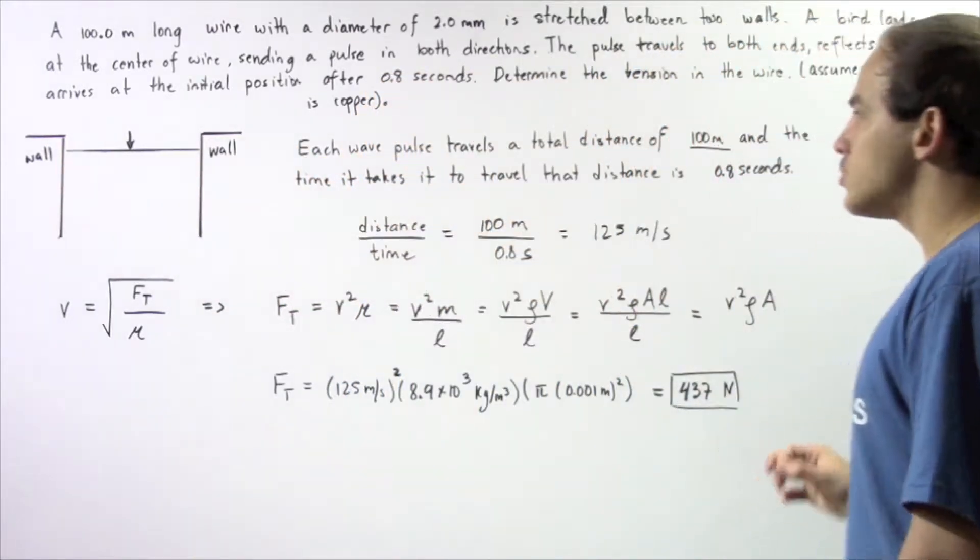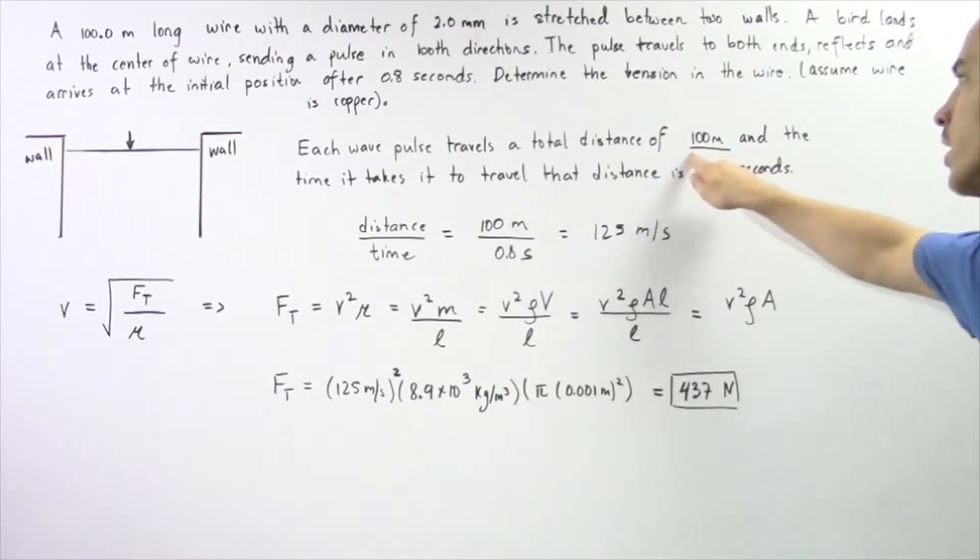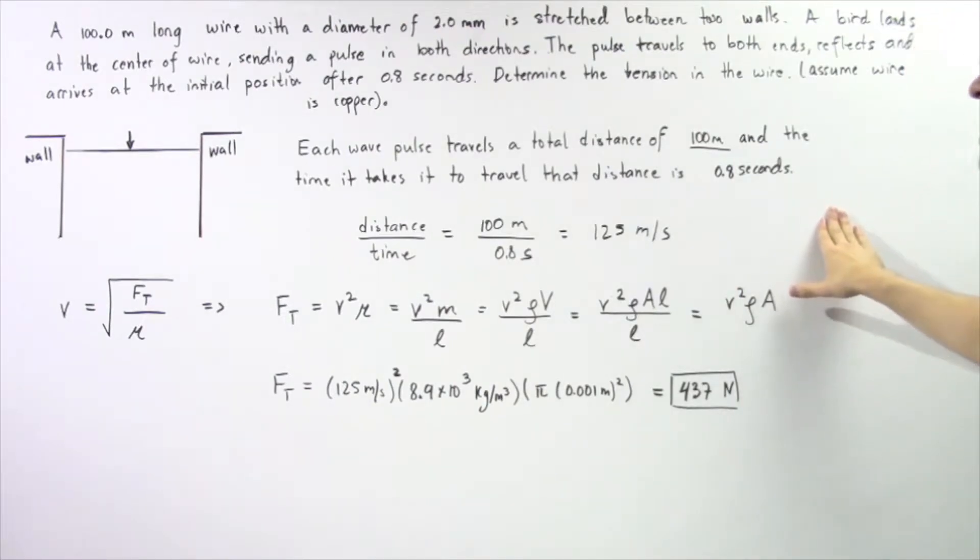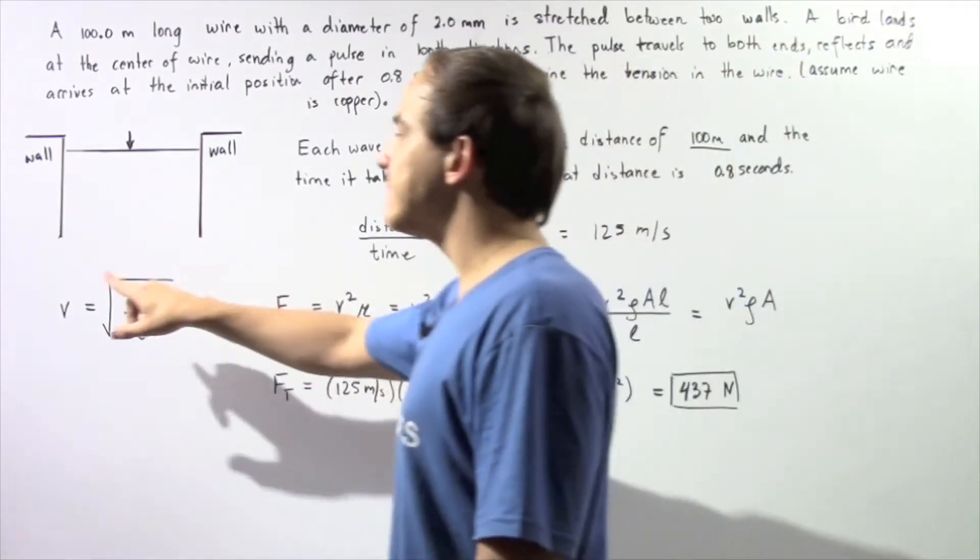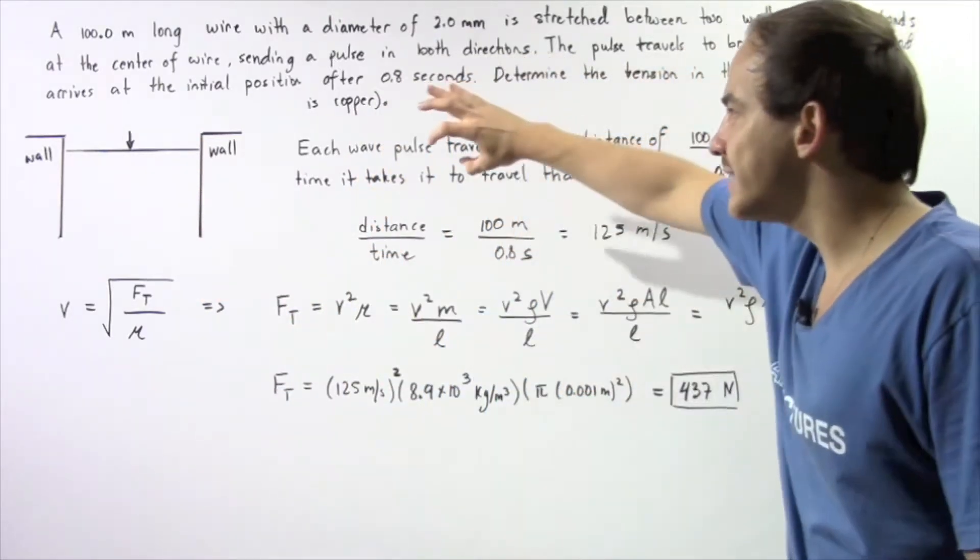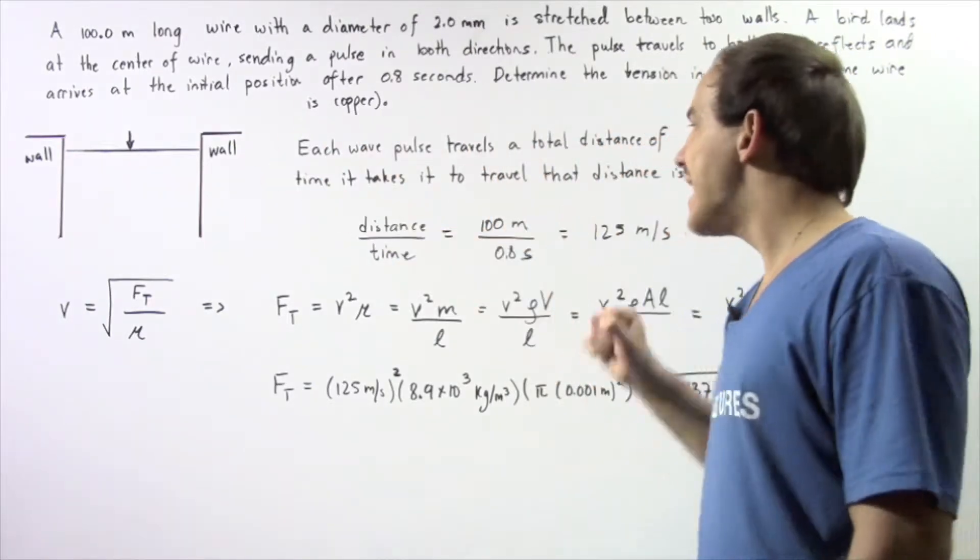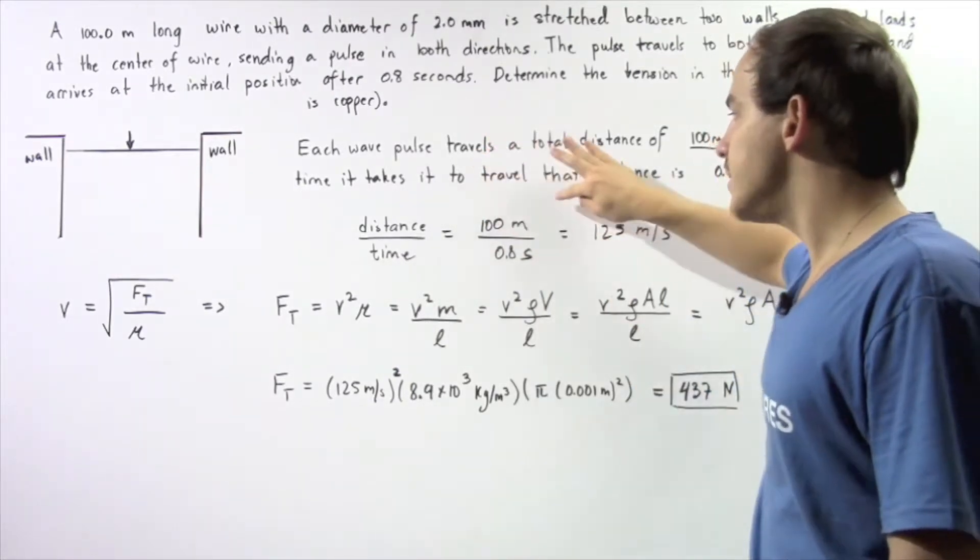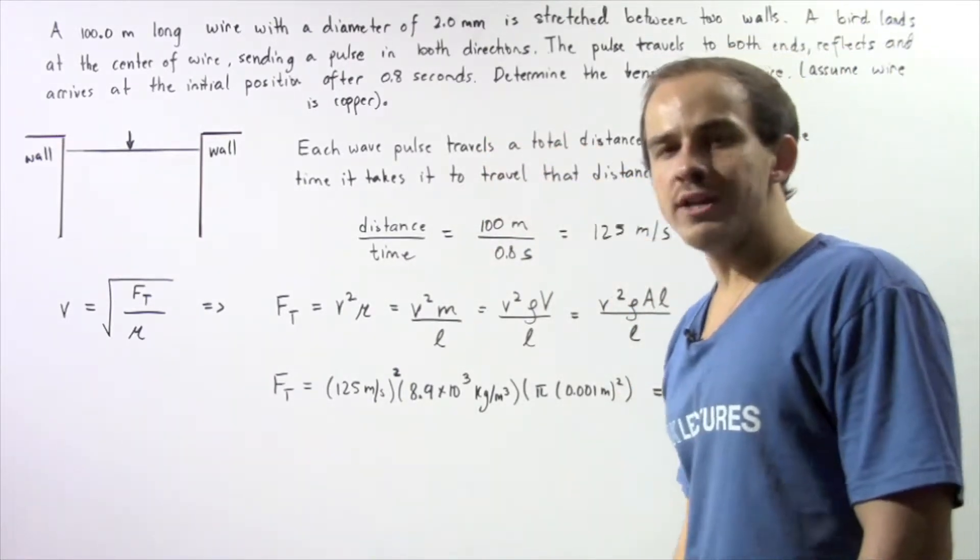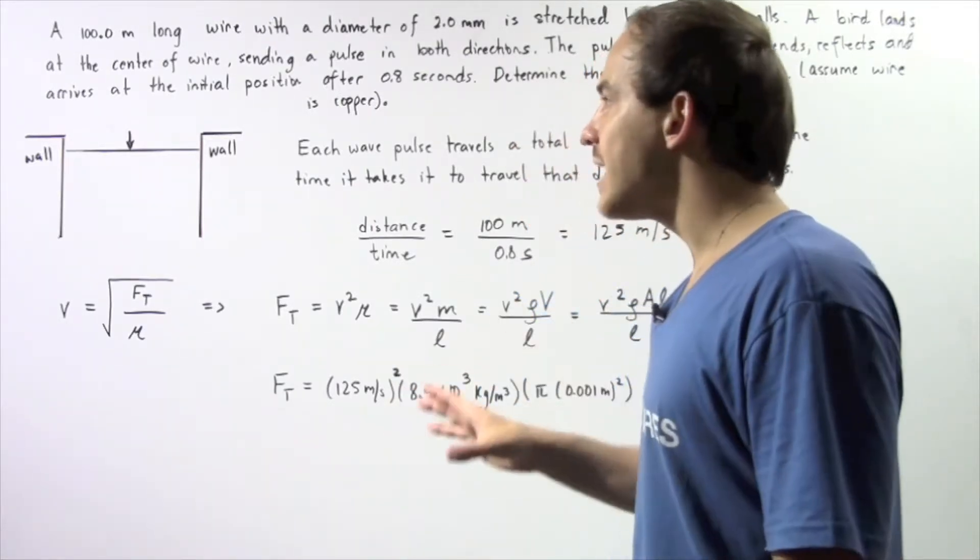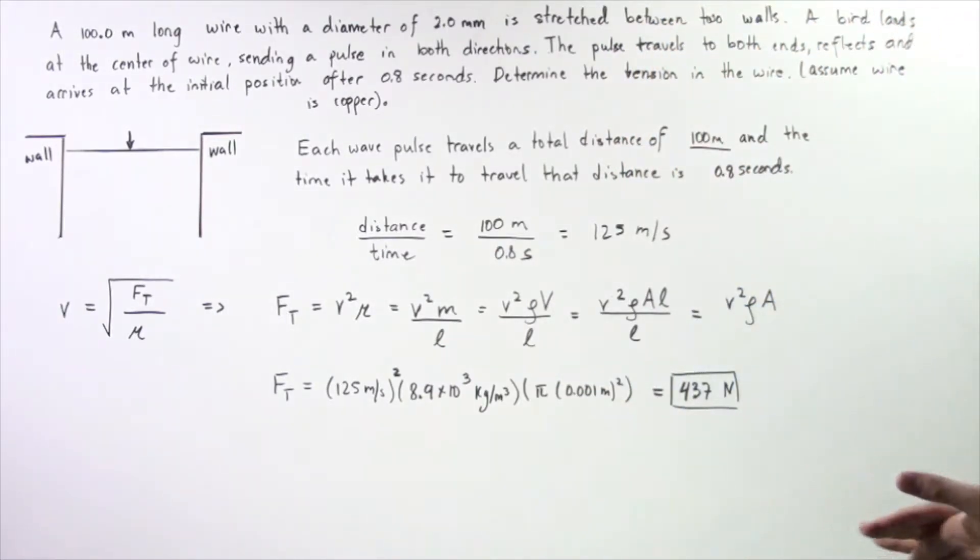So each wave pulse travels a total distance of 100 meters and the time it takes to travel that distance is given to be 0.8 seconds. So that means if we want to find the velocity of our wave inside our wire, we simply take the distance that wave travels and divide it by the time that has elapsed during that distance. So 100 meters divided by 0.8 seconds gives us 125 meters per second as the velocity of our pulse inside our copper wire.